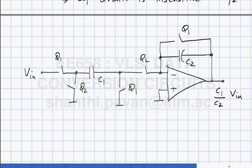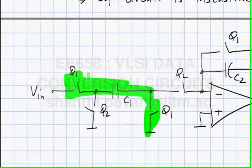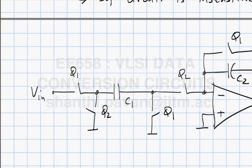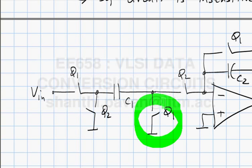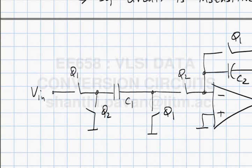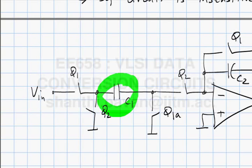Real switches have charge injection. Looking at this path, the bottom-plate switch must be turned off first — controlled by a slightly advanced clock phi1a. Even though there is charge injection on this switch due to C1 during the sampling phase, the amount of charge injected on C1 is independent of the input signal.